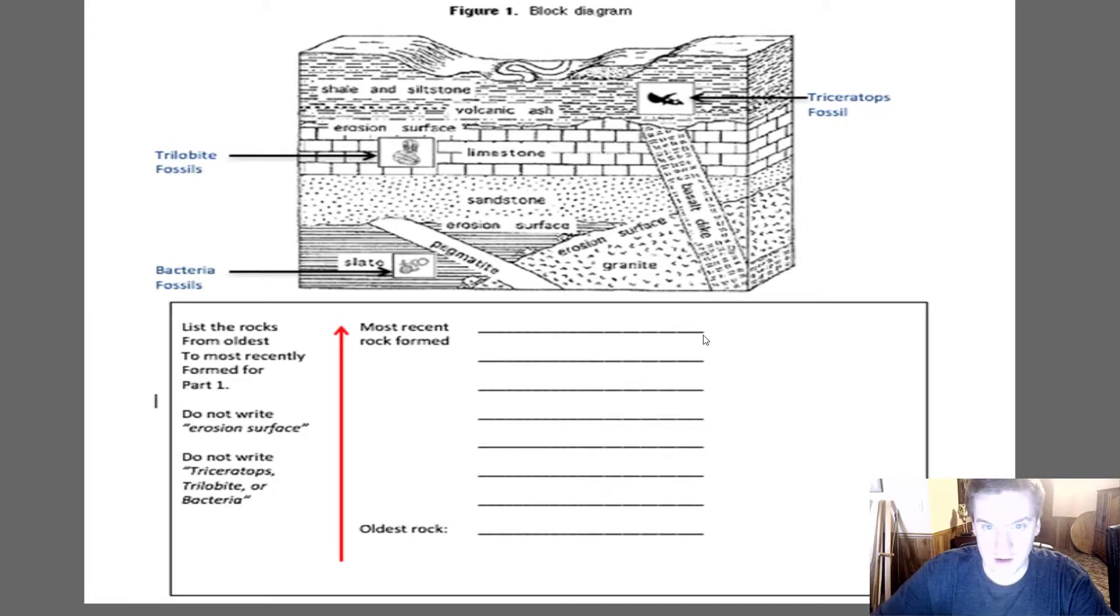Now, what I'm going to do is go over the answers. Our oldest rock, and this is probably the one that is the most confusing. I know that Mr. Zizi and I used to debate which one was first, which one was second, in these last two layers. I think this is probably the hardest part of the whole block diagram is just this very first one. It turns out that the oldest rock is actually the granite. This one might seem to violate one of our original rules, so I would totally understand if you had slate first.